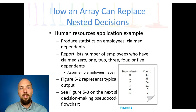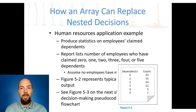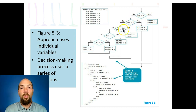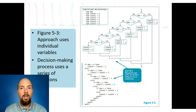We can also use an array to replace nested decisions. In a prior assignment, to find whether a grade was an A, B, C, etc., we checked one condition at a time — that's called a range check. We can also do this kind of range check with an array. For example, when finding which department someone works in, instead of checking 'is it department 0? department 1? department 2?' with nested if-else statements, we can use an array with a loop to determine the actual response, making our program much shorter.